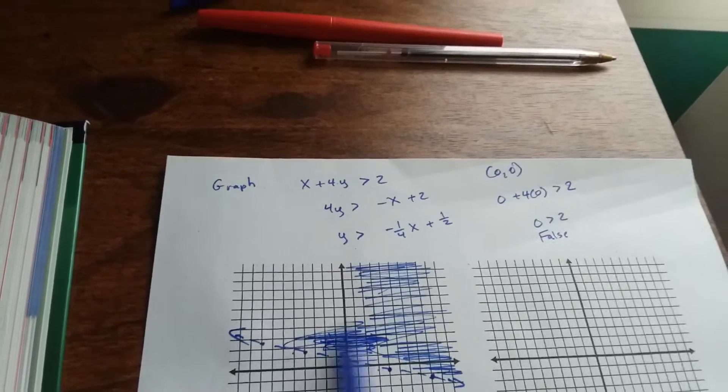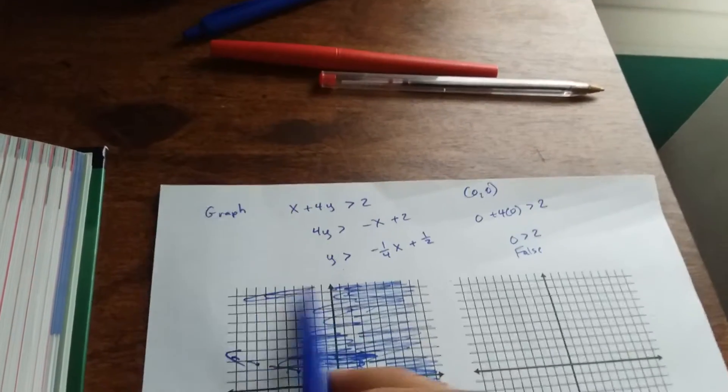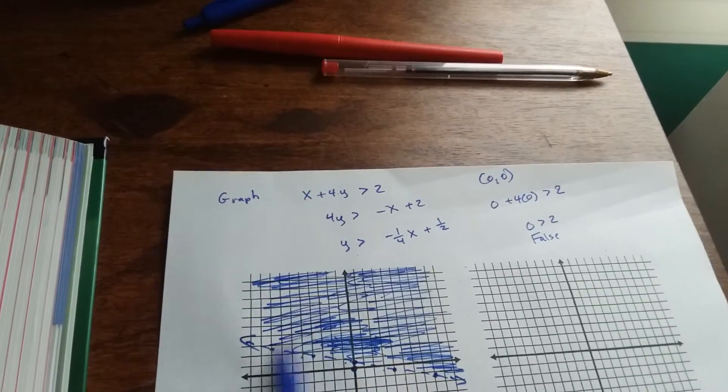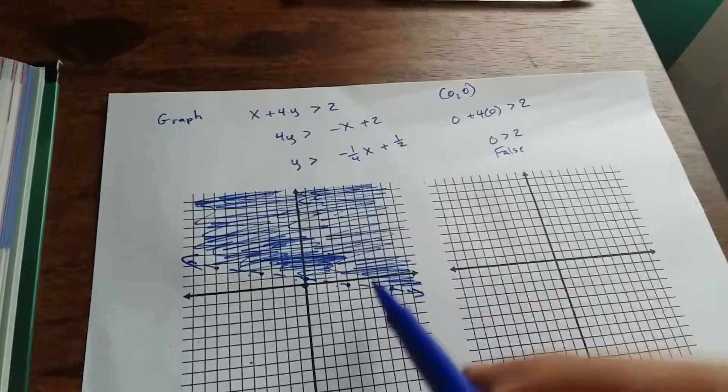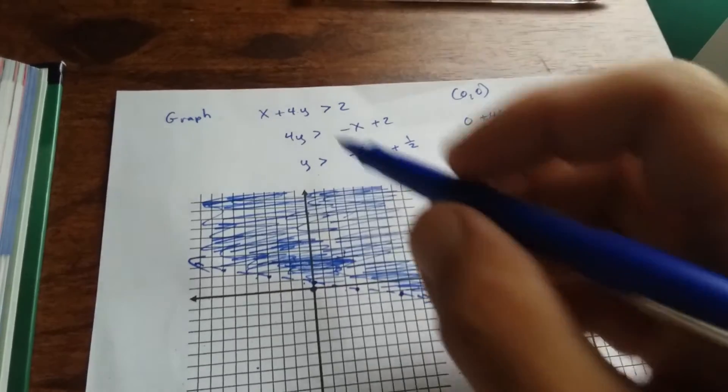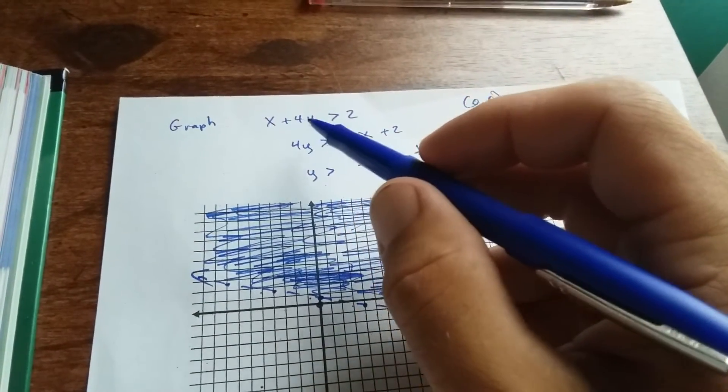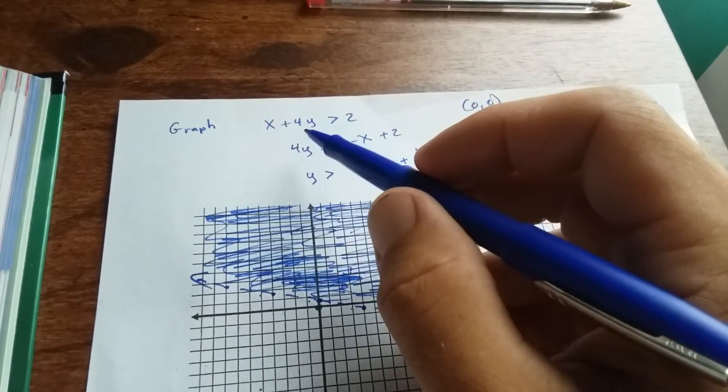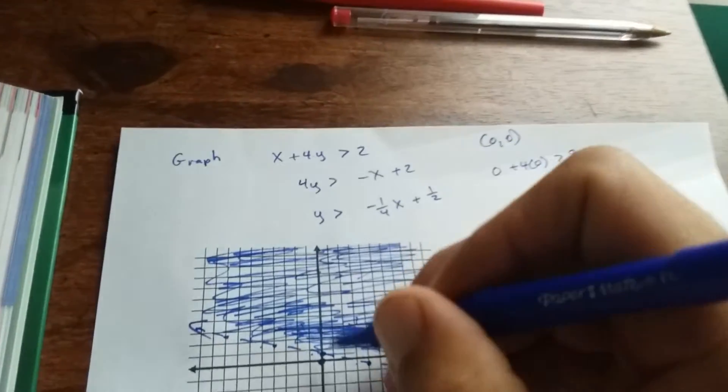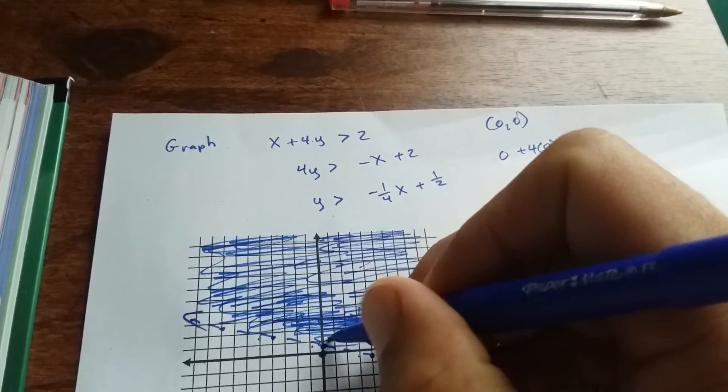And we could test more points to see that this is true. If you were to put in 1, 1, 1, 1 is in the shaded region up here. 1 plus 4 times 1 is 1 plus 4, which is 5. 5 is greater than 2. So this point here, 1, 1, that we shaded in, that's part of the solution because it makes a true inequality statement.